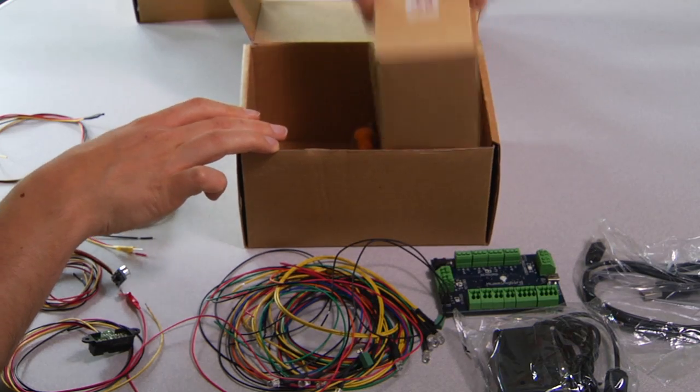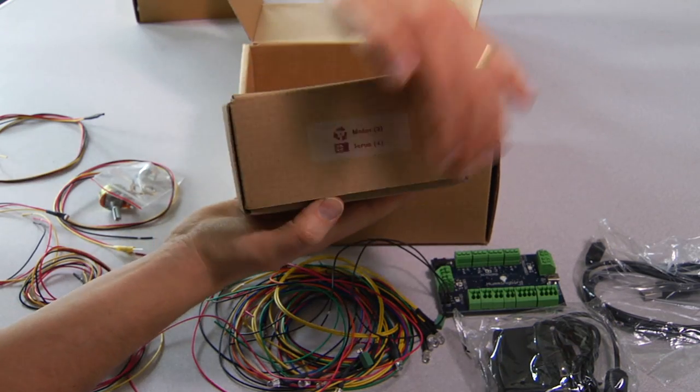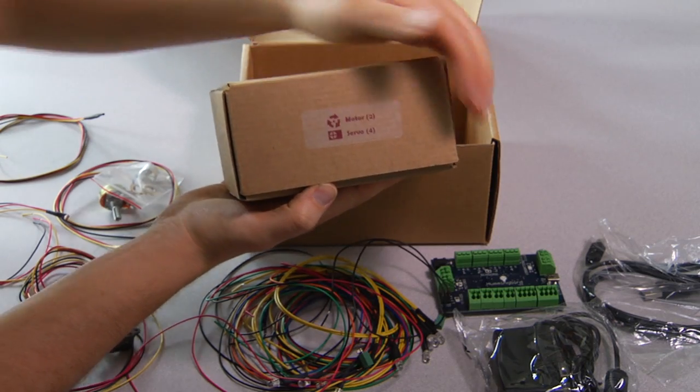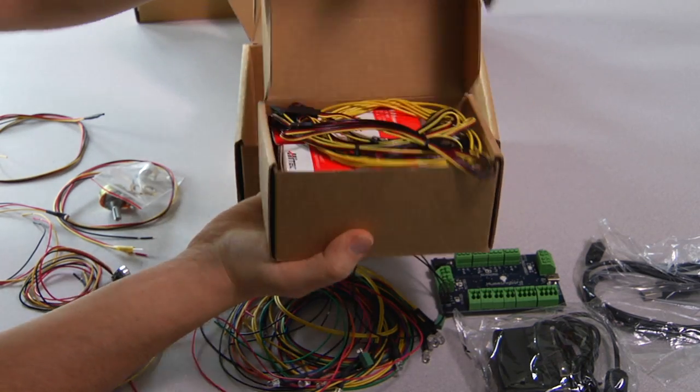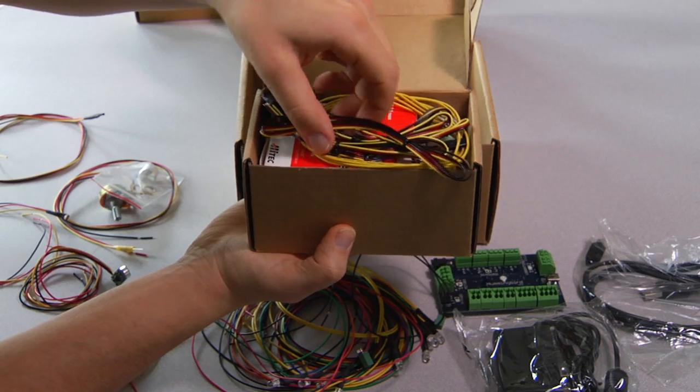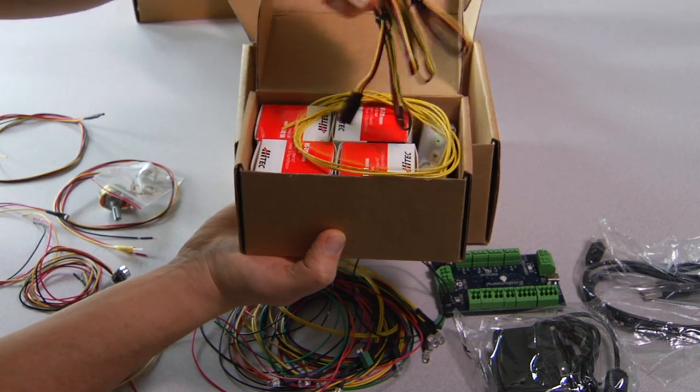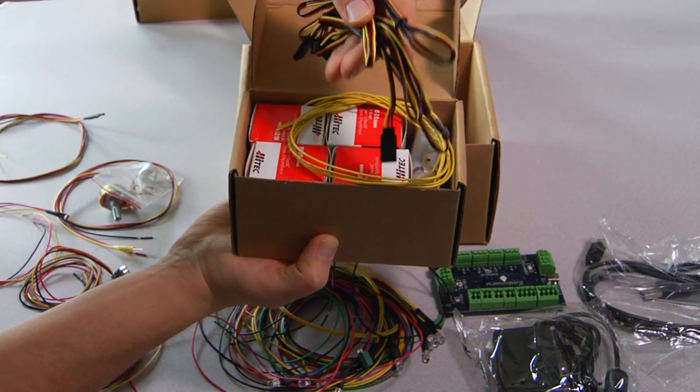The last box is the motors kit. So in here are two DC motors and four servos, as well as four servo extension cables. So that's the first thing you come across is these extension wires.